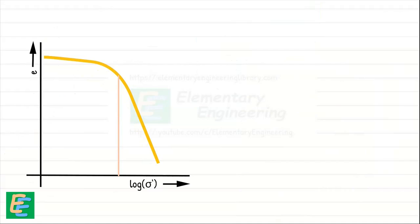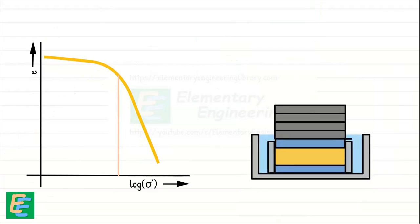The Casagrande method is a graphical technique to estimate the pre-consolidation stress from the void ratio and log of effective stress curve obtained from the consolidation test. We have discussed this test in our previous video.